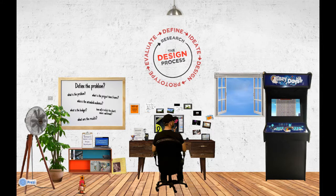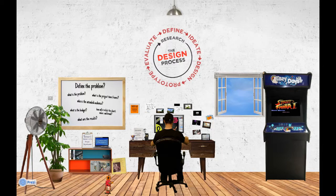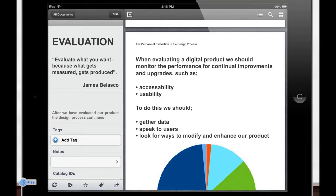We delivered it, tested it with a few people, and it seemed to work fine, so we put it up on the web. But evaluation — the final step — never really ends. You should constantly be evaluating sections and bits of your project; in fact, little bits of your project will go through the design cycle in themselves. Every year I evaluate what's working and what isn't with the client. I look at ways of improving accessibility and usability, gathering data, speaking to users, and looking for ways to modify and enhance the product. The App Store rating system is a great way for developers to get feedback — even Microsoft has error reporting. Big companies are doing continuous evaluation all the time.